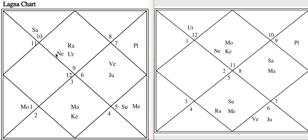Now let us see how to read and reconcile certain house themes. Before that, I want to say there are many different ways to read a Tithi Pravesh chart. Some people take the day lord — the lord of the day on which the Tithi Pravesh falls. For example, if it falls on a Thursday, they look at Jupiter. Some people take the hora lord. If you are born in Mercury hora, they say Mercury will be the most important planet. There are different opinions.